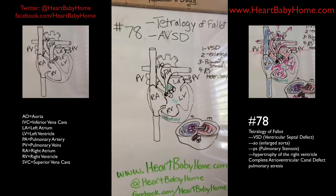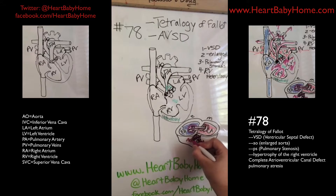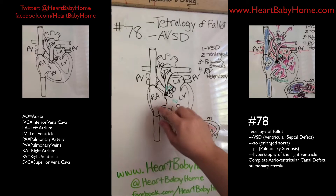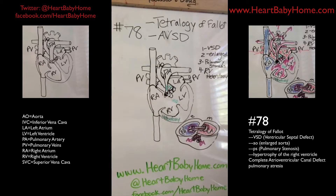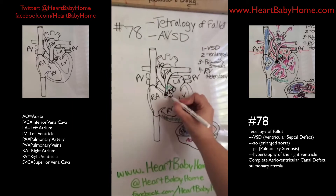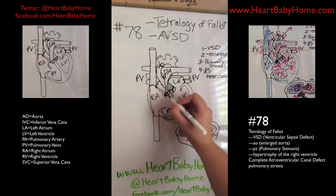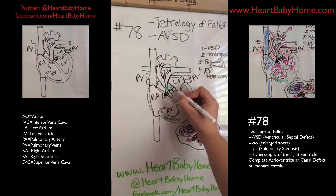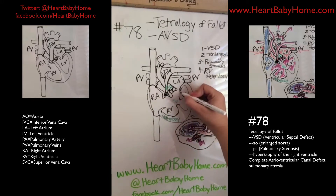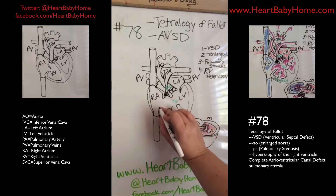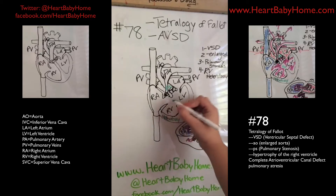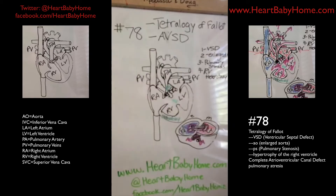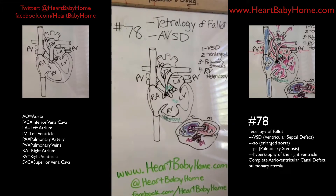The oxygenated and deoxygenated blood are mixed together, and the same thing happens for the blood going to the lungs through the pulmonary artery. The septal wall tries to come up and the valves try to close, but they don't close all the way and everything mixes together.